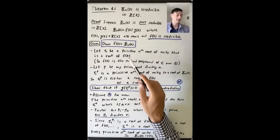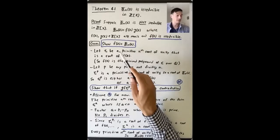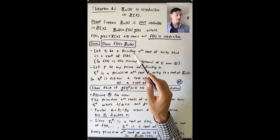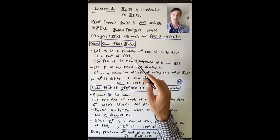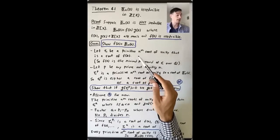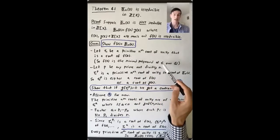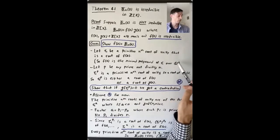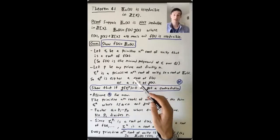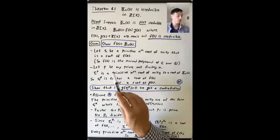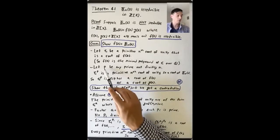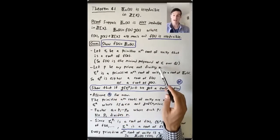What does that mean about f(x)? This is a monic irreducible polynomial with coefficients in Q — it is the minimal polynomial of zeta over Q. This is a clever idea and one of the key things to remember in this proof: we're going to pick any prime p not dividing n.